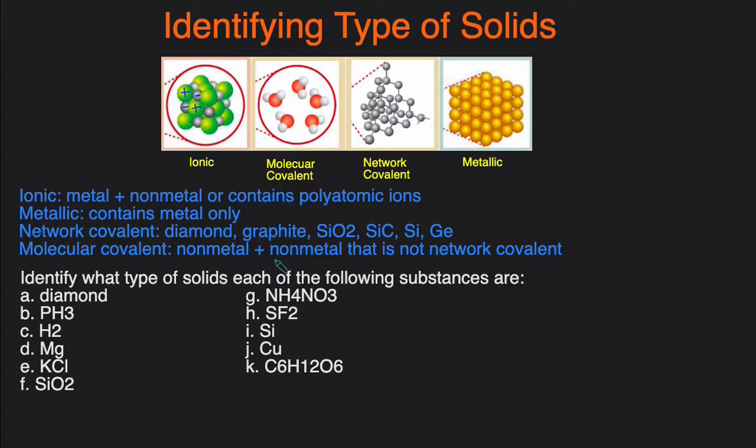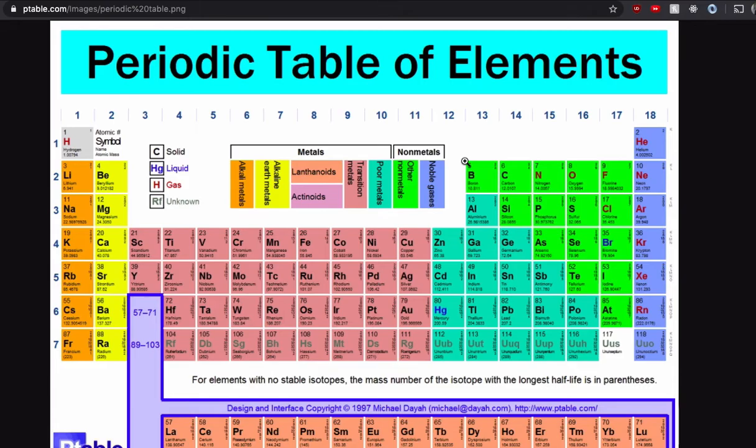Alright, now let's jump into the examples and take a look at what type of solid each of these are. Actually, let's first cover how to determine if an element is a metal or a non-metal, because you're gonna need that skill to be able to do the subsequent examples.